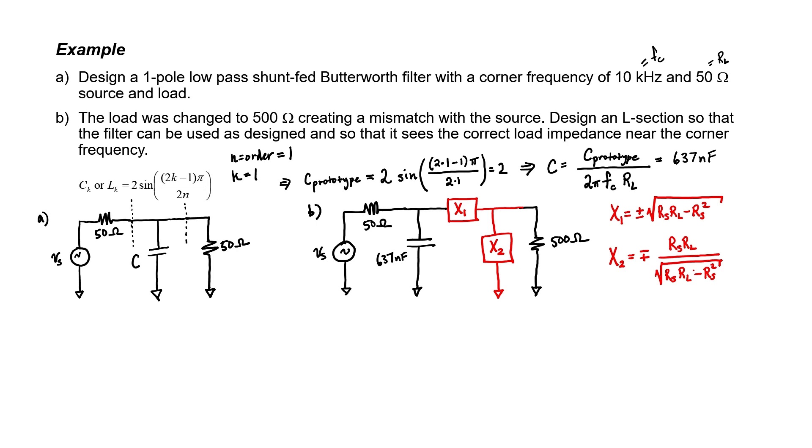The source resistance is 50 ohms and the load resistance is 500 ohms. Therefore I have everything I need in order to find these two reactance values. Reactance one is plus or minus 150 ohms and reactance two is minus or plus 167 ohms. We have two pairs of solutions. Let's look at both of them.